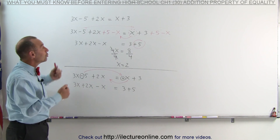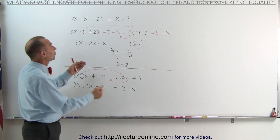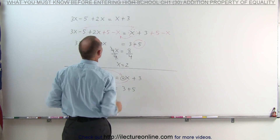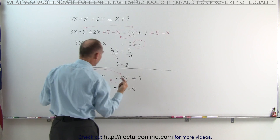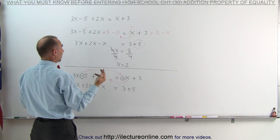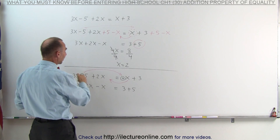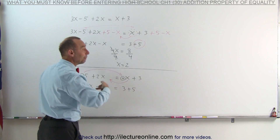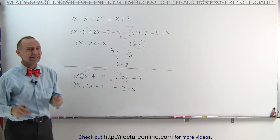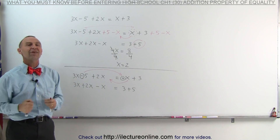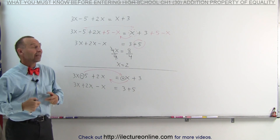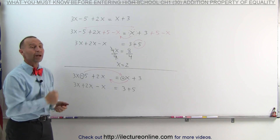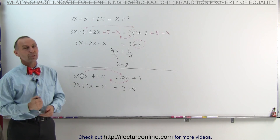So either you can use the technique where you add the same thing to both sides of the equation to make something disappear, or you could simply say you're going to move what you don't want on that side to the other side by simply changing the sign. It's exactly the same thing, and that's exactly what we mean by the addition property of equality.